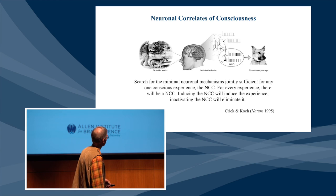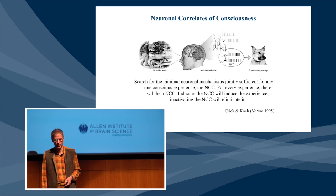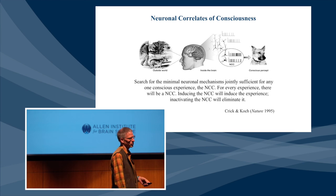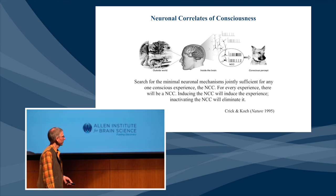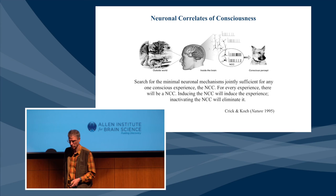Furthermore, for every specific experience that you're capable of having, there will be a neural correlate of consciousness. And if you induce this neural correlate of consciousness — either using transcranial magnetic stimulation, microelectrode, or optogenetics in an experimental animal — you will induce that experience. While if you inactivate the neural correlate of consciousness using some means, you will eliminate the associated conscious experience.